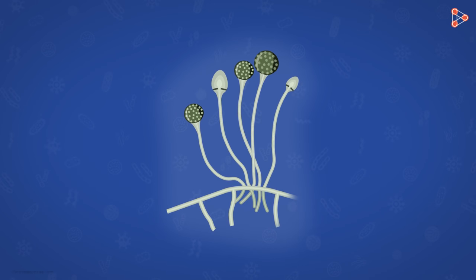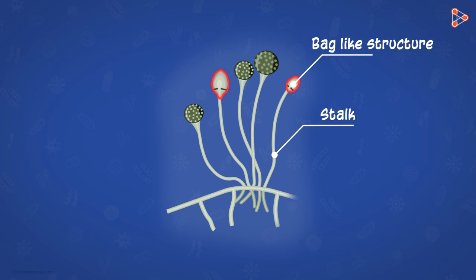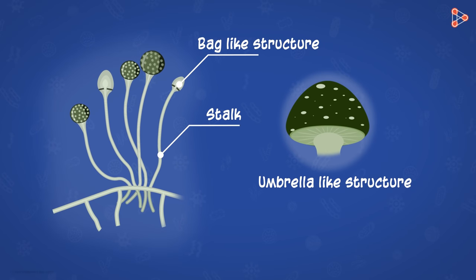The multicellular body usually consists of a stalk-like structure and a cap on top of it. This cap comes in various forms. Some of them may have a bag-like structure, others may have an umbrella-shaped structure. Both these are dedicated to a special role — they contain spores of the fungi, which can be dispersed to give rise to new fungal bodies on germination.